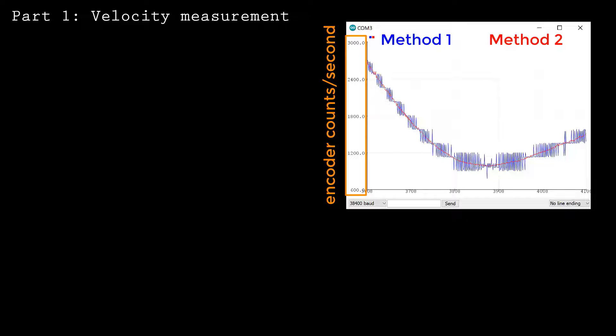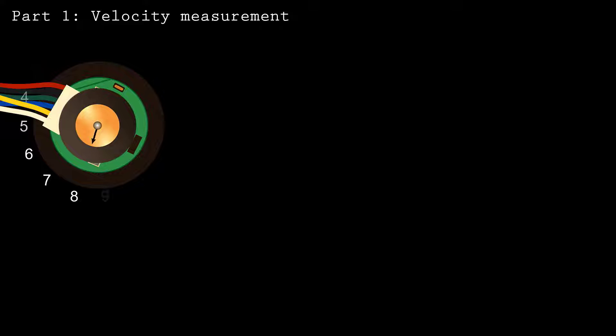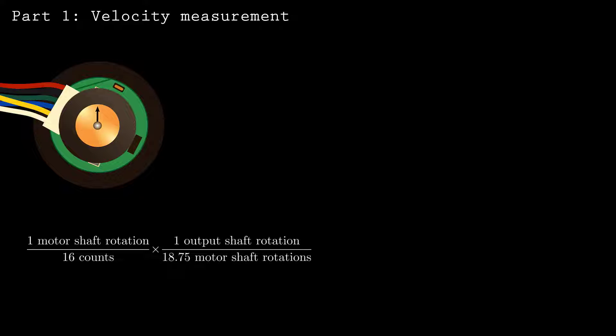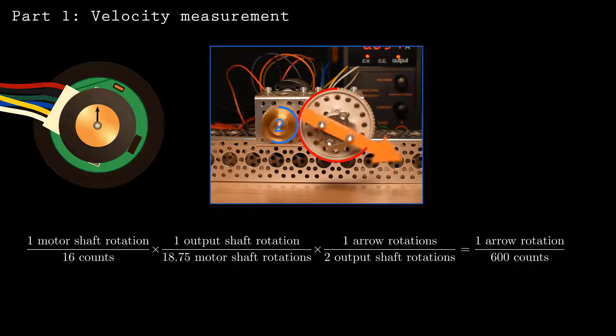Here, I'll convert the speed to rotations per minute using my motor specifications. This Pololu motor records a maximum of 64 counts per motor shaft rotation. We're only measuring one out of every four events, so we measure 16 counts per rotation of the motor shaft. This motor has a gearbox with an 18.75 to 1 gear ratio. I've also added external gears with a 2 to 1 gear ratio.